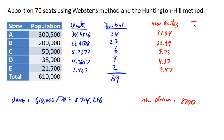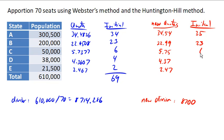Let's see what the allocations would look like then. This one will round up, that one will round up, that one will round up, that one will round down, that one will round down. Now we get our 70 seats allocated as we were hoping for. Webster's method is done.